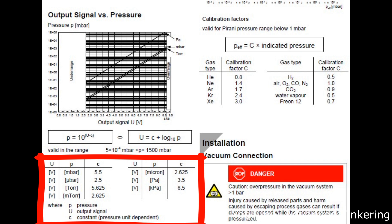This constant value determines the unit your pressure will be in. So for example, if you want your pressure in millibar you would use a C of 5.5. If you want your pressure in Torr you would use a C of 5.625.